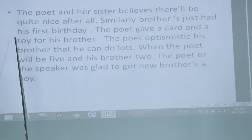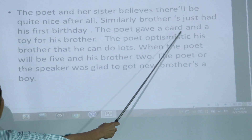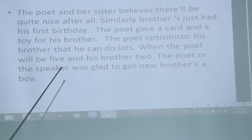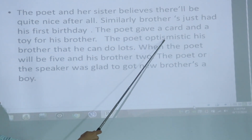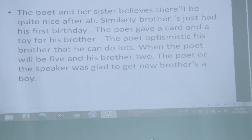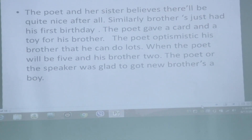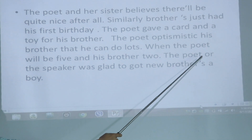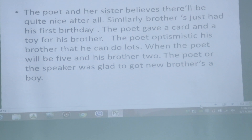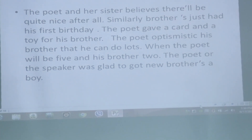Similarly, the brother just had his first birthday, and the poet gave him a card and a toy as a gift. The poet is optimistic that her brother can do lots as he grows. When the poet is 5 and her brother is 2, they can do activities together. At last, the poet was glad to have a new baby brother.